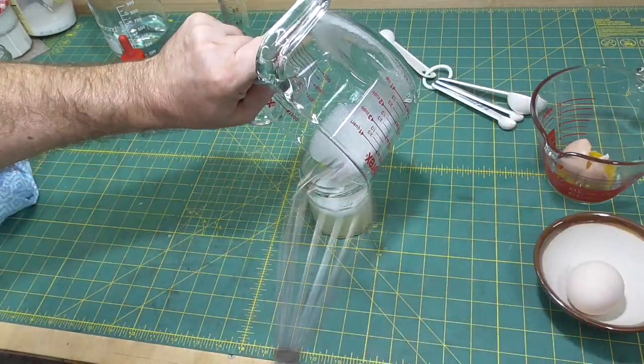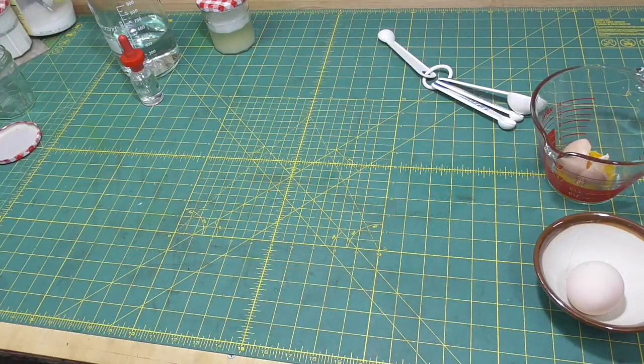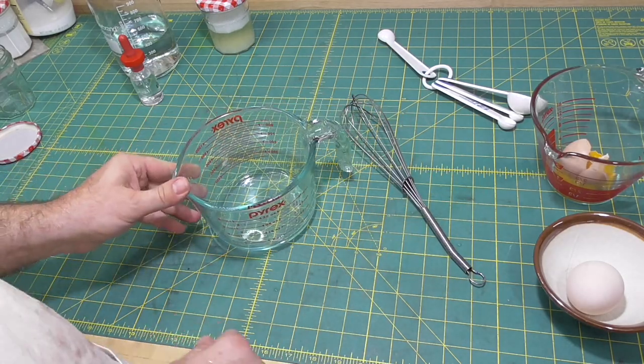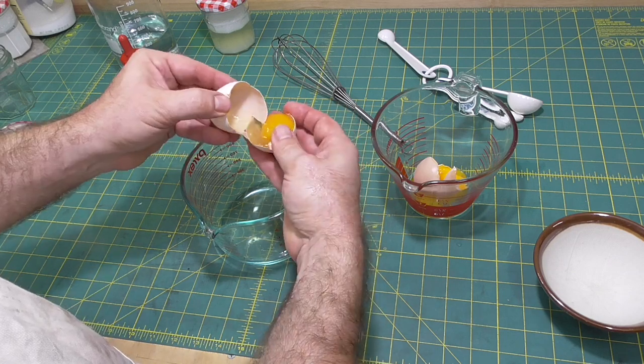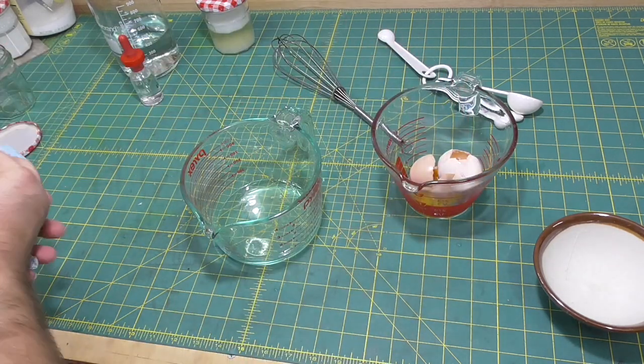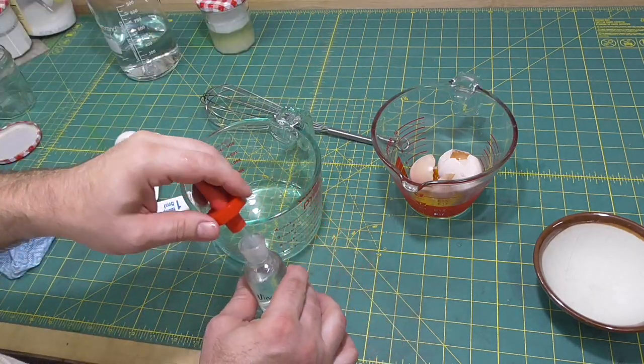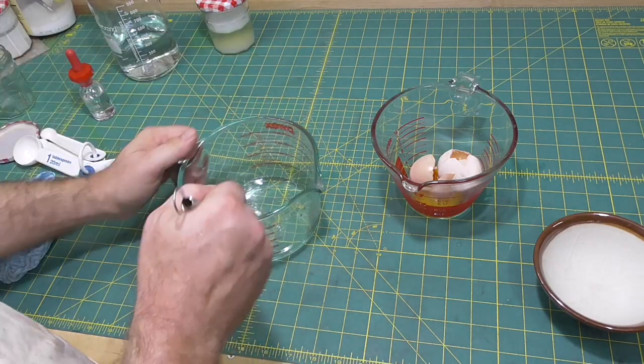The instructions in the International Bookbinder say to use egg glare a little thicker than used for finishing. At the time, I was thinking they meant the thickness as in the ratio of egg white to water and vinegar. But in hindsight, I think they meant the amount of glare to put down on the surface.